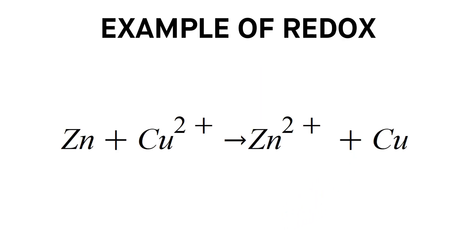We here see a simple redox reaction. Zinc transfers two electrons to copper. In a battery, the zinc would in this example be the negative terminal and the copper would be the positive terminal.